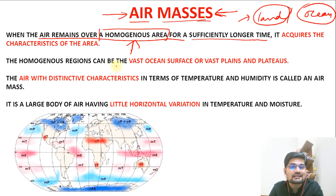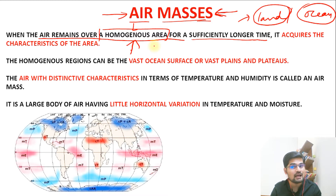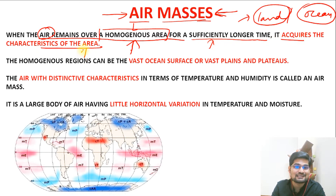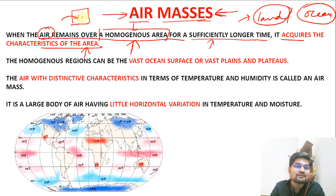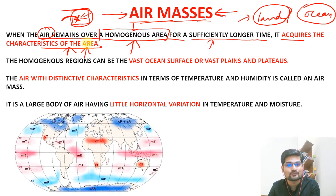A homogeneous area basically means it has a similar kind of landscape. The kind of landscape determines the insolation and albedo factors. Also the temperature and pressure gradients and factors associated with topography. So if there is a homogeneous area, it will have similar climatic conditions throughout. If the air is there for a longer time, this air will acquire the characteristics of the area. It's like if you go to a particular country and start living there for 5 or 10 years, you gradually start living in their ways, their traditions, their customs — your nature starts to get along with the nature of that area. These air masses also acquire the characteristics of the area they belong to.